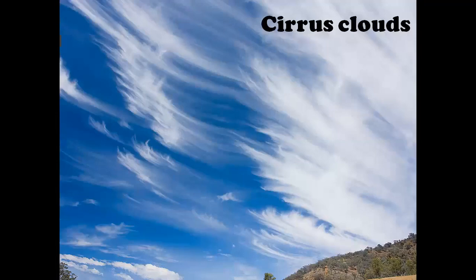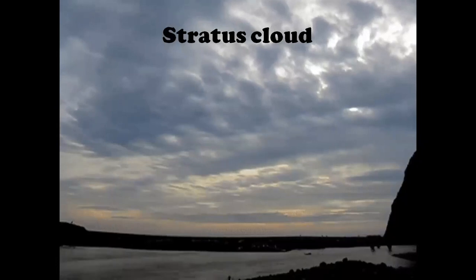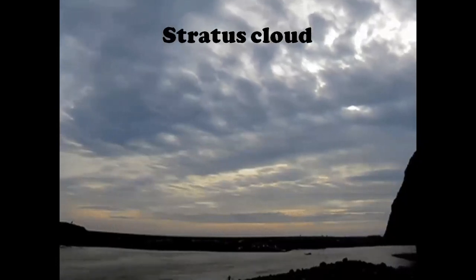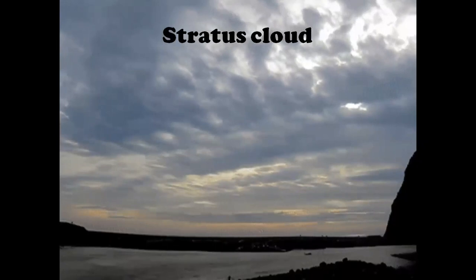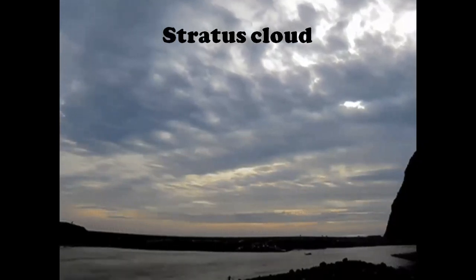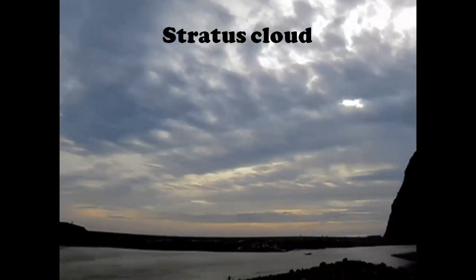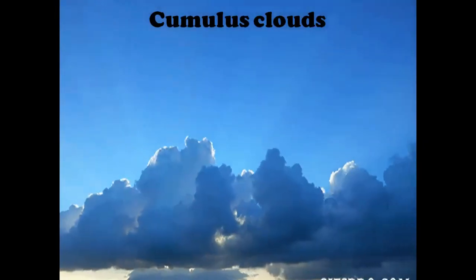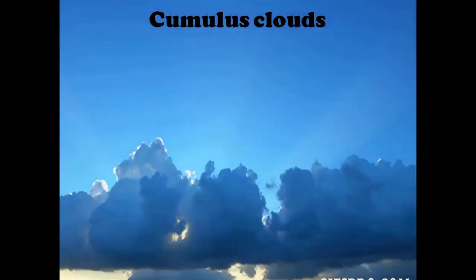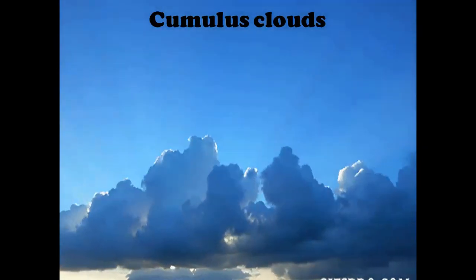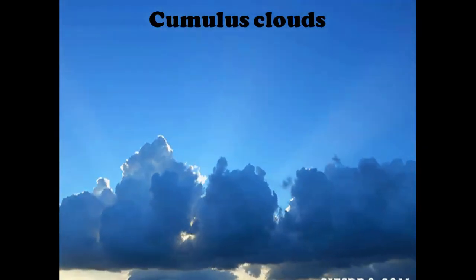If we talk about clouds, they are of mainly three types. One is cirrus, which are very thin and wispy. The another type is stratus clouds, which look like a large grey sheet covering the entire sky. And the third one is cumulus clouds, which are very dense and widespread and look like a dome shape.